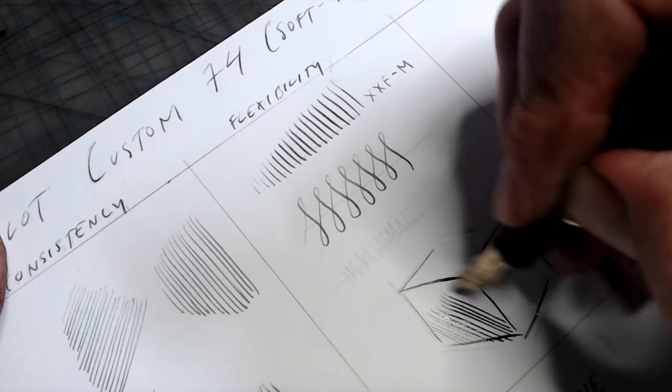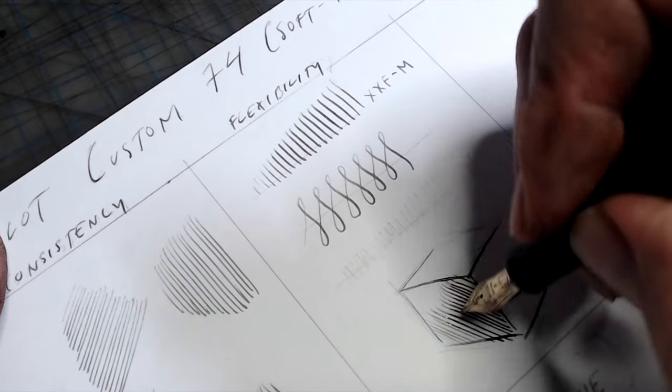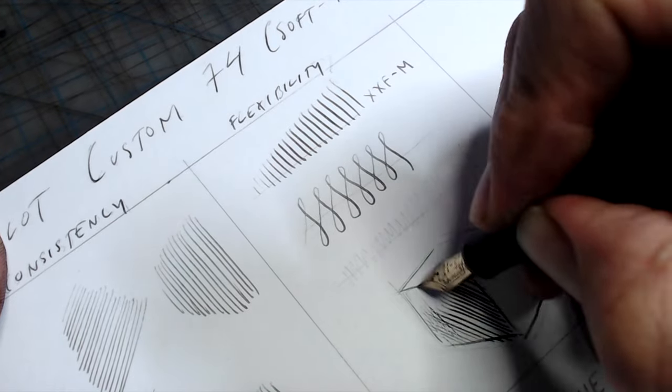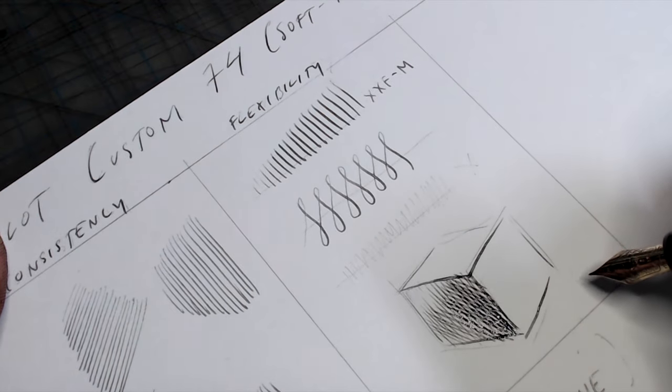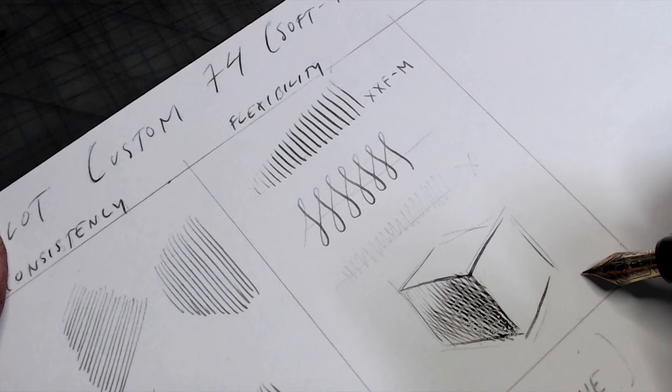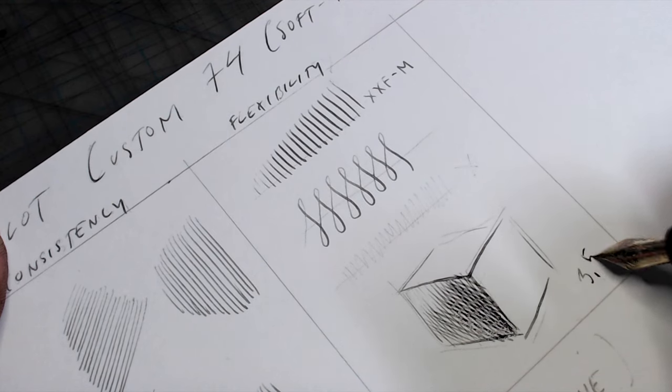So, on my flex rating scale, which goes from 1 to 10, one being super stiff, like a platinum preppy, and a 10 being super flexible, like some of those rare wet noodles you see mostly on vintage pens, this pen is about a 3 or perhaps a 3.5.